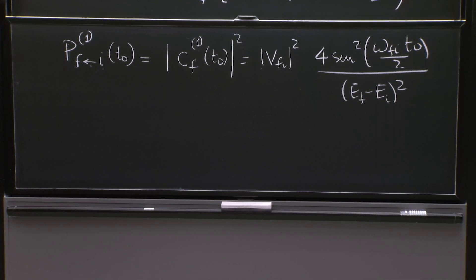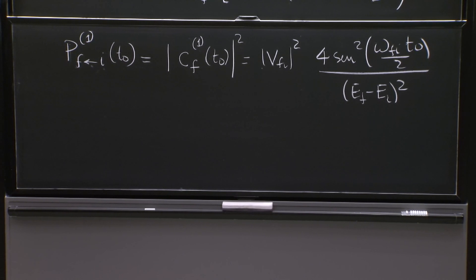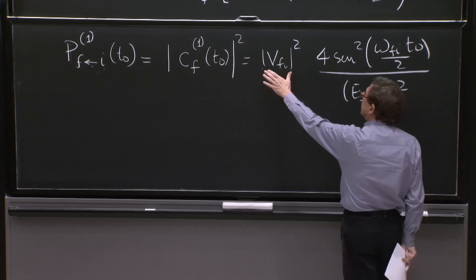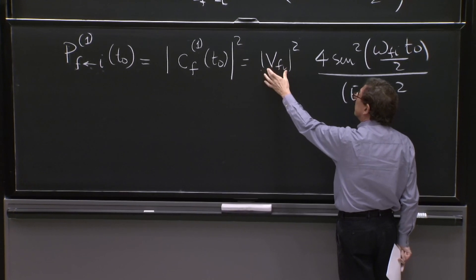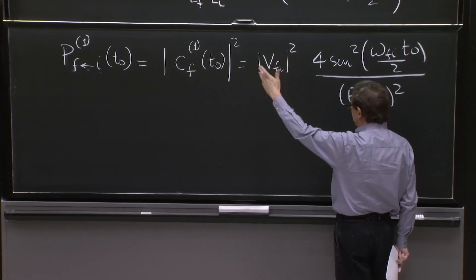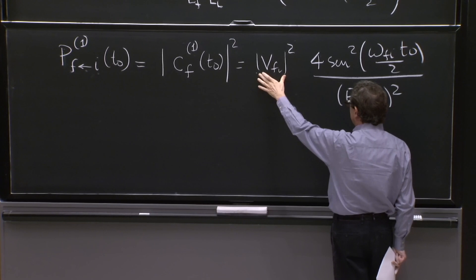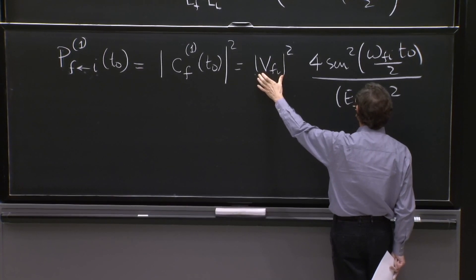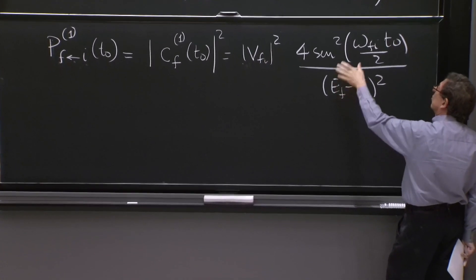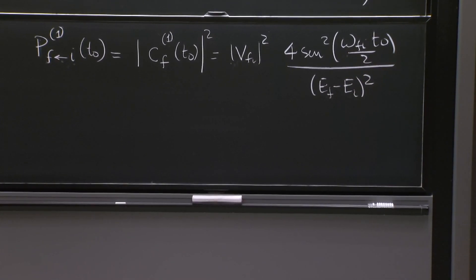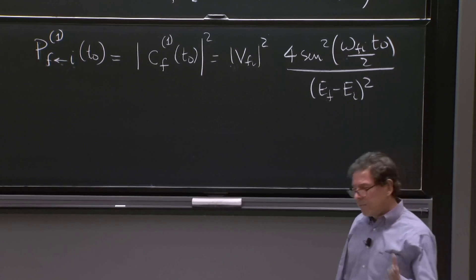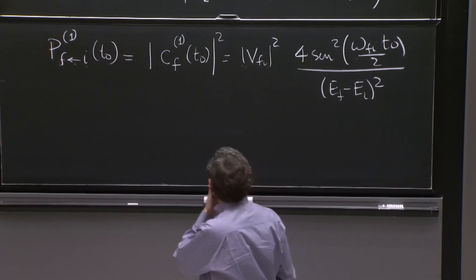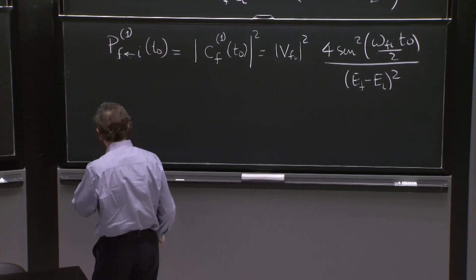And this is unit free. This has units of energy. v is a variation of the Hamiltonian. It has units of energy. When you put states, states are normalized. So it doesn't change the units. And this has units of energy squared. This has no units. And this is the answer, a little strange.